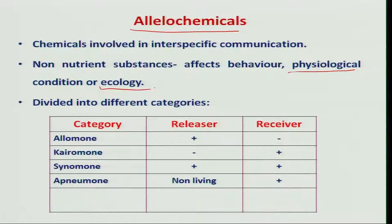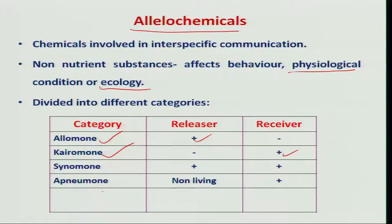Here we have a few categories. One is allomon, where the releaser is going to benefit by releasing the chemical, not the receiver. But in case of kairomone, the receiver is going to benefit. In case of synomone, both the releaser and receiver are going to benefit. In case of another category called anemone, the chemicals are produced by non-living substances and only the receiver is going to benefit.